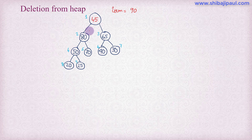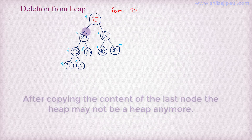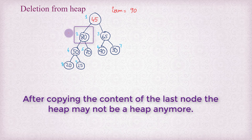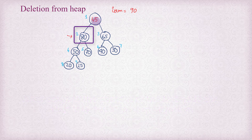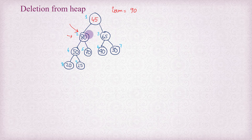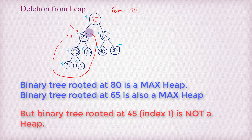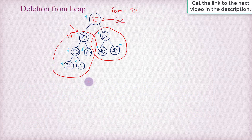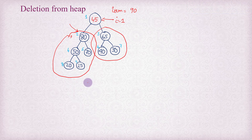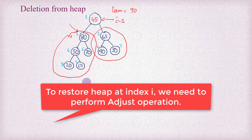Immediately after copying the content of the last node into the root, we find that the heap is no longer a valid heap. Because 80 is the left child of the root which is larger than 45, and 65 is also larger than 45. The subtrees are still heaps, but the heap property is not maintained at index i equals 1. We need to perform some logical steps to restore the heap at i equals 1. This procedure is known as the adjust operation, or in some books, the restore heap down operation.